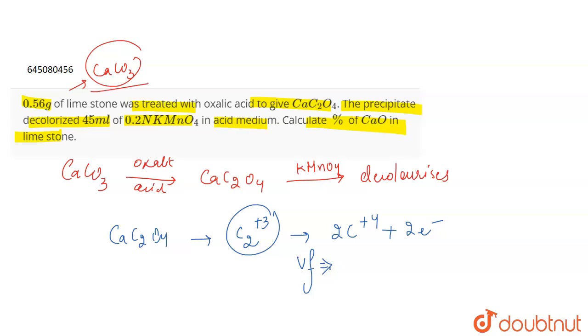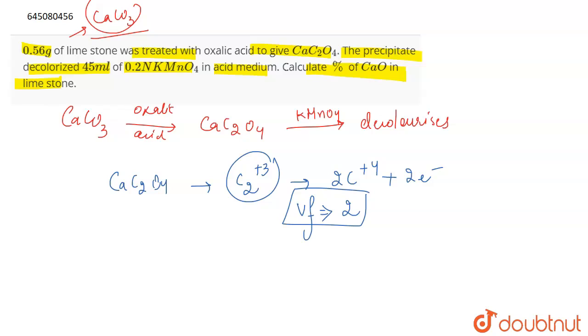the valency factor means the number of electrons involved. Here it will be 2. The valency factor is 2. Now, for KMnO4, it is in +7 oxidation state, contains 5 electrons, and changes to +2 oxidation state, so the valency factor of KMnO4 is 5.